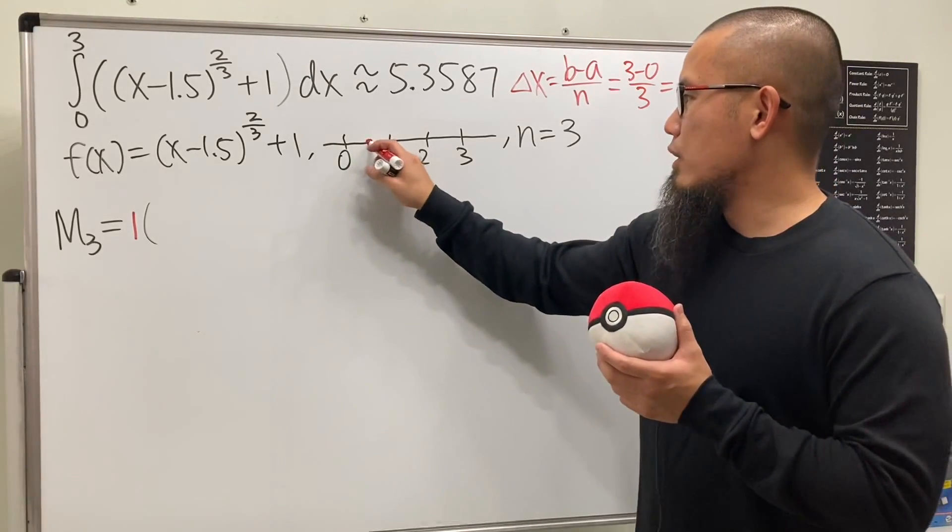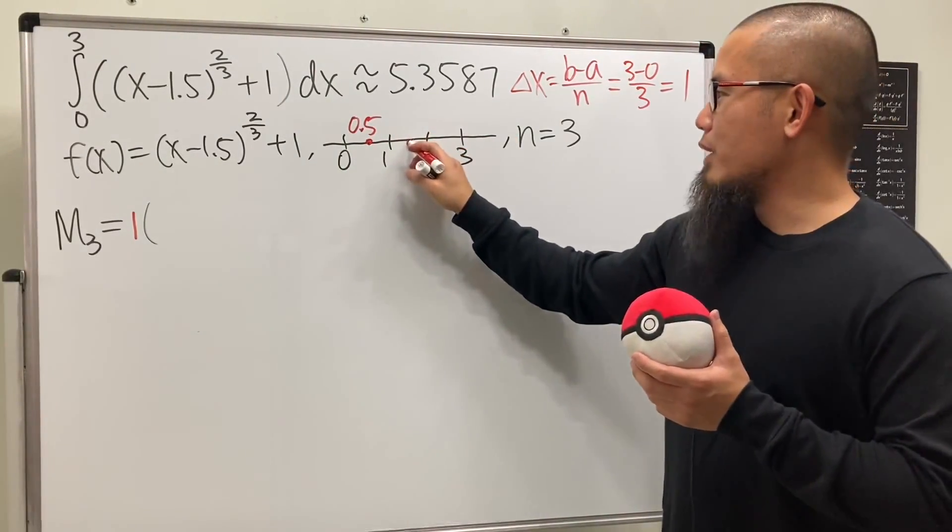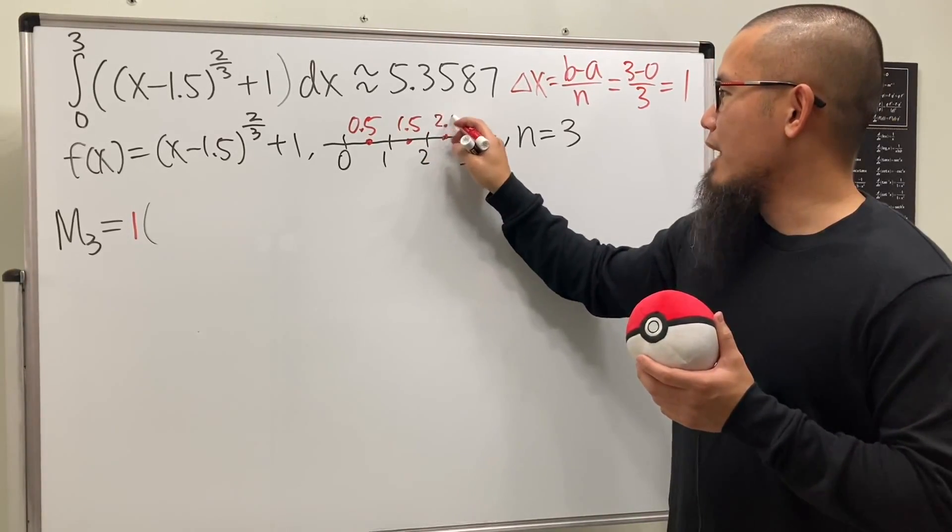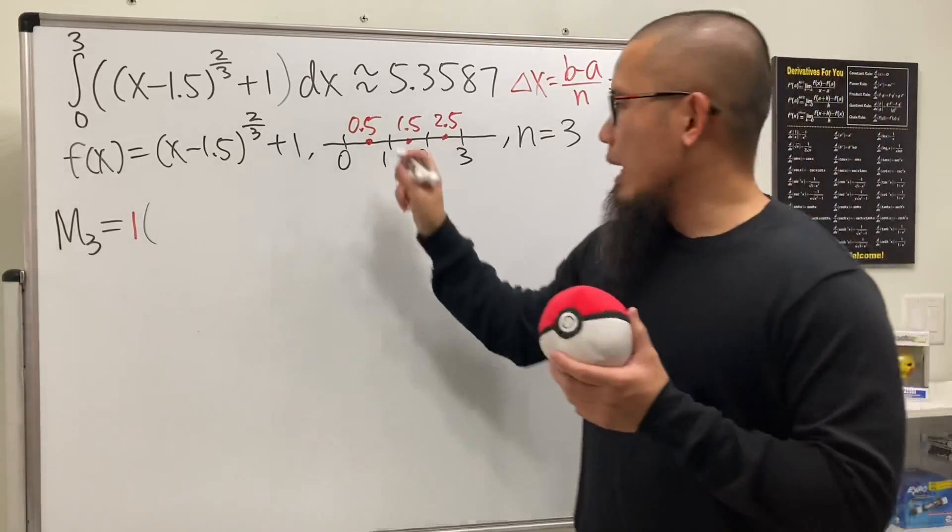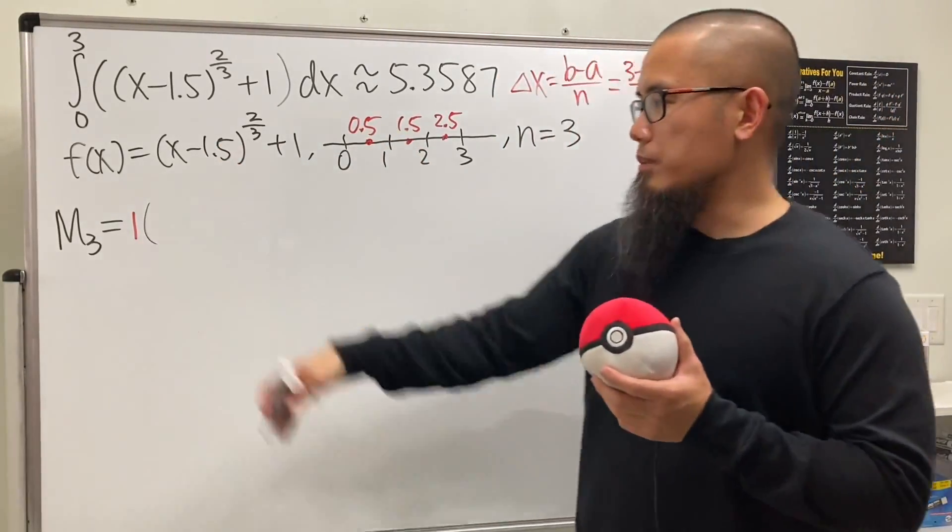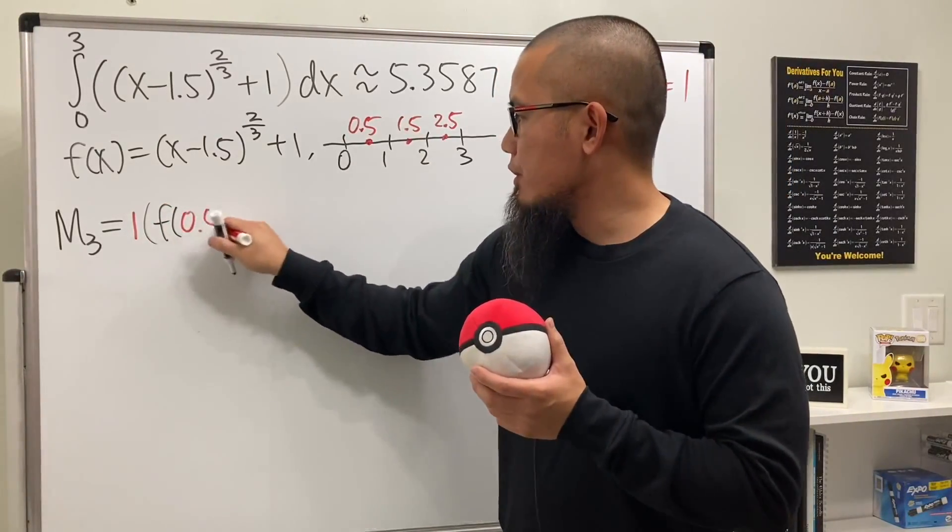We have to find the midpoint of all this. The middle of this is just 0.5, not bad. Next we have 1.5, also not bad, and then of course 2.5, very nice.